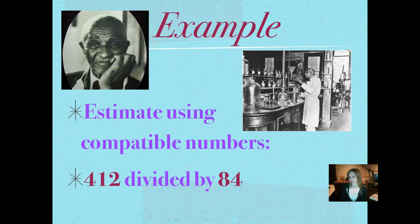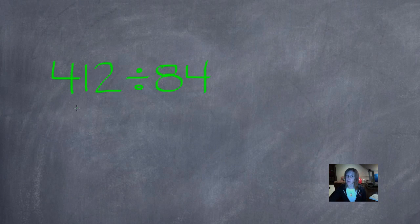So now we're back to estimating using compatible numbers, 412 divided by 84. Let's check out how we did this one. So I went ahead and wrote the numbers the way we write them to solve them for mental math.